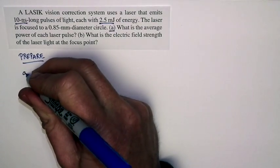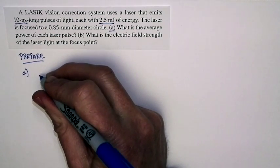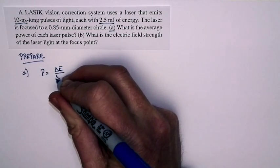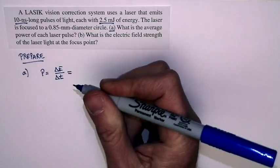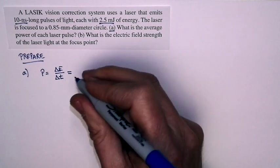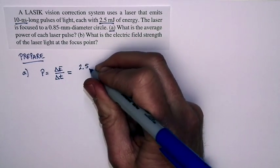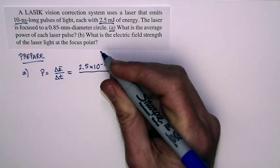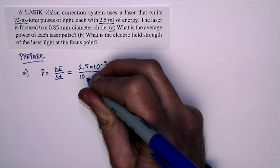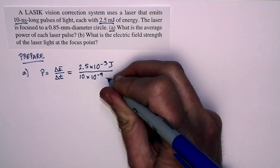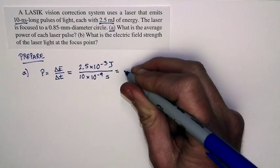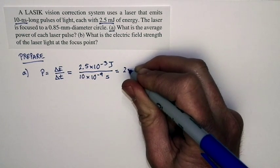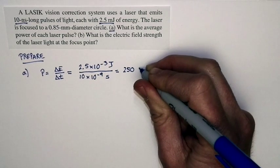What is the average power of each laser pulse? Well, for part A, the power is just equal to delta E over delta T. That's always true. Let's go ahead and calculate that. The energy of each pulse is 2.5 millijoules, 2.5 times 10 to the minus 3 joules. The time of the pulse is 10 nanoseconds, 10 times 10 to the minus 9 seconds.